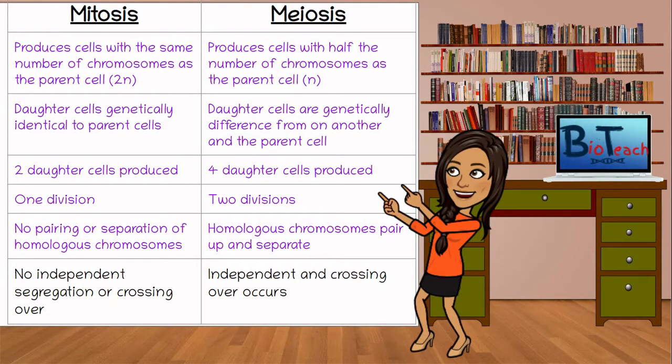The next point on the table is looking at homologous chromosomes. Homologous chromosomes are two pieces of DNA within the diploid organism which carry the same genes, one from each parental source. In mitosis, the homologous chromosomes do not pair up. In meiosis, though, they do.